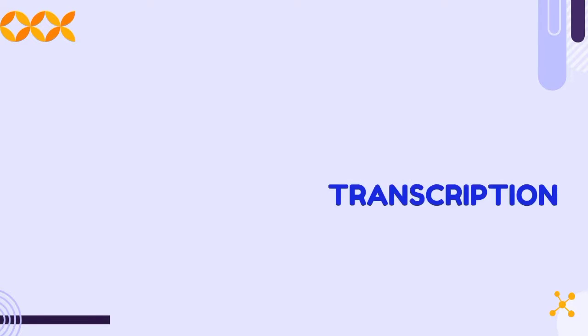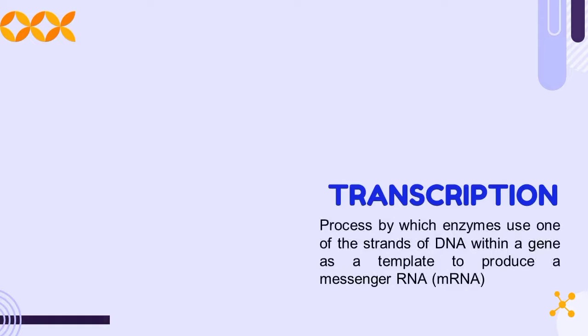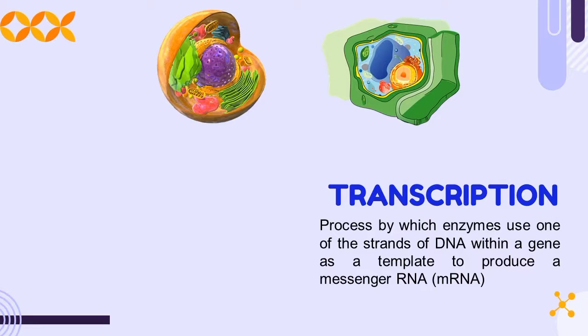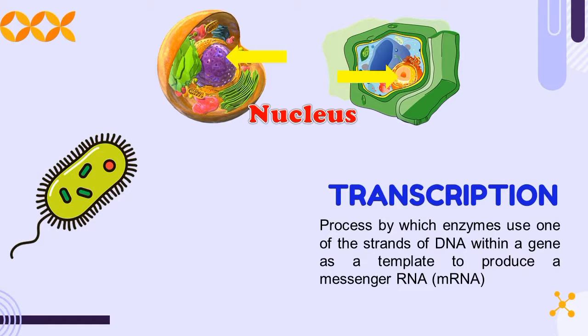Now, let us have the transcription. It is the process by which enzymes use one of the strands of DNA within a gene as a template to produce a messenger RNA or what we called mRNA. So again, in eukaryotic cells, transcription takes place inside the nucleus, while in prokaryotic cells, since they don't have any membrane-bound organelles, transcription takes place in the cytoplasm.